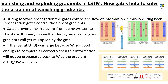During forward propagation, the gates control the flow of information. Similarly, during backpropagation, gates control the flow of gradients. Gates prevent any irrelevant information from being returned to the state. It is easy to see that during backpropagation, gradients will get multiplied by the gate. If the loss at LT was large because W was not good enough to complete S1 correctly, then this information will not be propagated back to W, as the gradient del LT by del W will vanish.